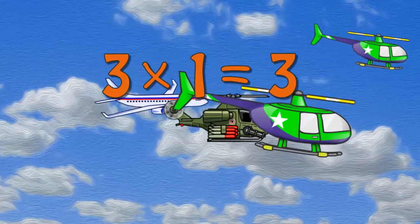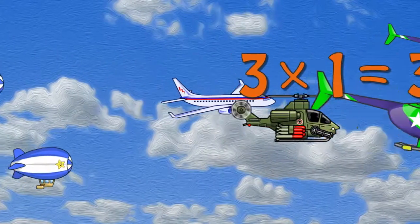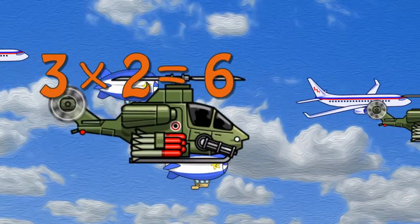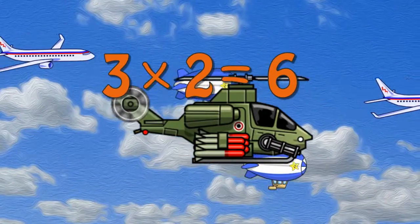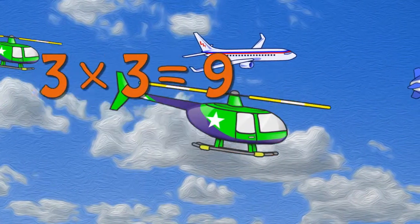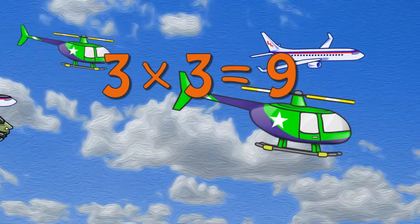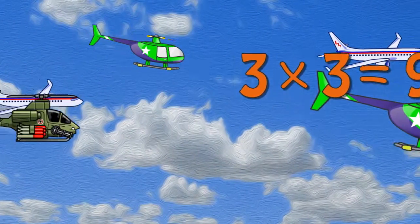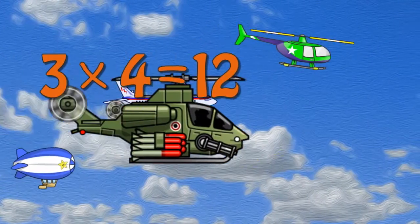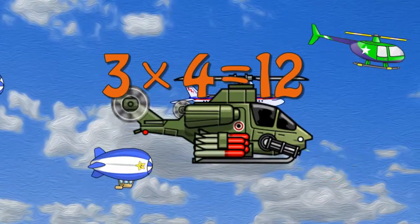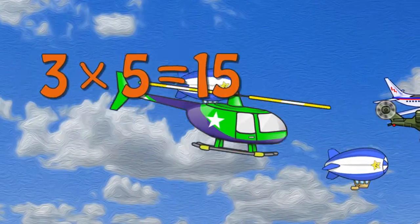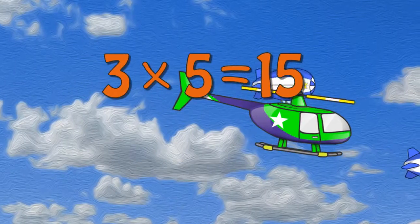Three times one is three. Three times two is six. Three times three is nine. Three times four is twelve. Three times five is fifteen.